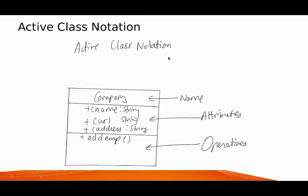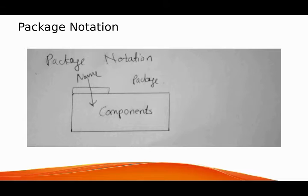The active class notation is similar to a class but shows the class name 'Company' with attributes such as C name, C URL, and C address — all of string type — and operation 'add EMP' for addition of employee. The package notation shows a component as a package — name is 'Component' — and represents how the package notation is structured.